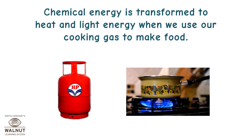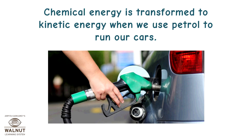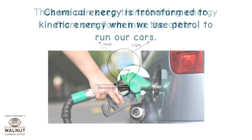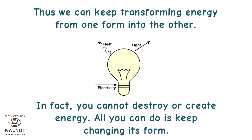Chemical energy is transformed to heat and light energy when we use cooking gas to make food. Diwali firecrackers transform chemical energy into heat, light, and sound all at the same time. Chemical energy is transformed to kinetic energy when we use petrol to run our cars. Thus, we can keep transforming energy from one form into another. In fact, you cannot destroy or create energy — all you can do is keep changing its form.